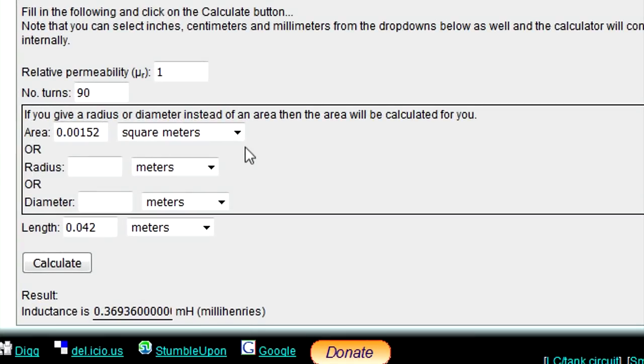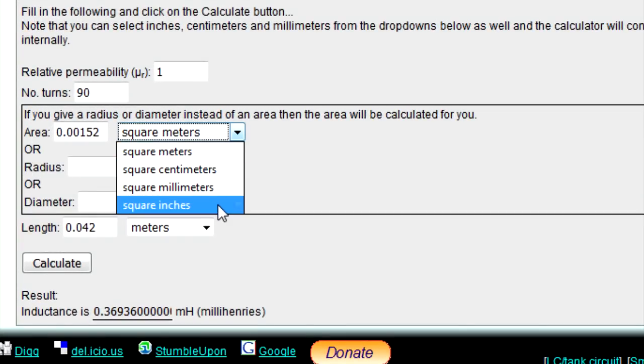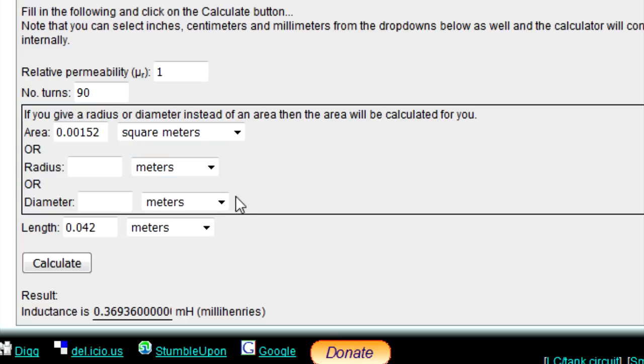Here's the same thing in my online calculator on my website, except that the calculator conveniently allows us to also enter centimeters, millimeters, or inches, and converts to meters internally. You can also just give the radius or diameter, and it'll figure out the area for you.